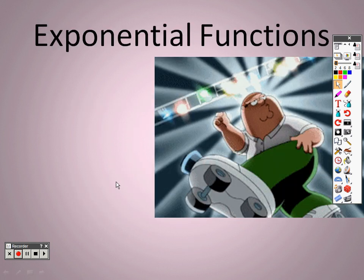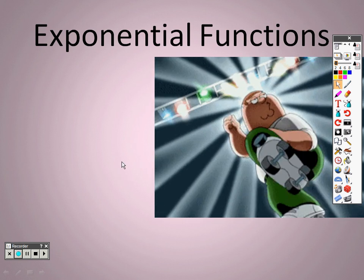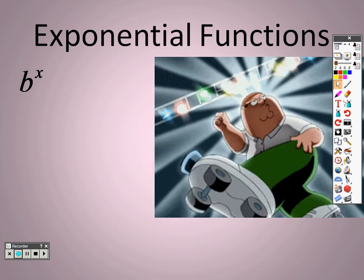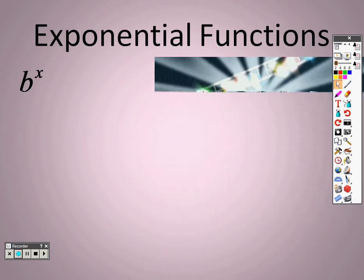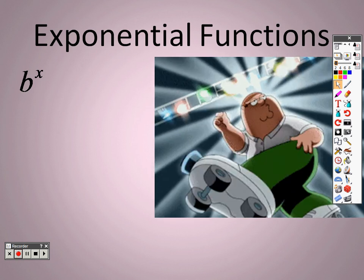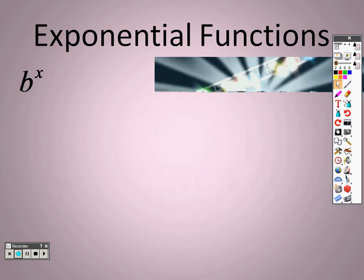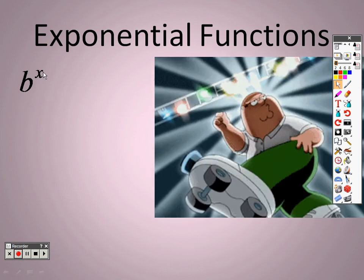Exponential functions — it's basically saying that you have b to the x. Prior to this, the x has been down on the side as a variable. We were graphing equations like x plus 3, quadratics like x squared plus 3x minus 7, or even cubes like x cubed plus 3x squared minus x plus 8. Everything we've talked about had the x in the base.